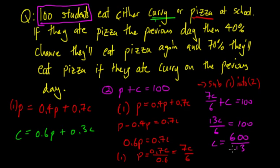So that means 600 over 13 students in the long run will eat curry. We then sub this number back into 2 and we can work out pizza, in the long run how many people eat pizza.